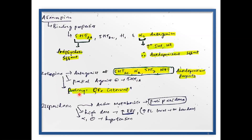Zotepine also has partial agonism at 5-HT1A, which may contribute to its antidepressant property. It tends to cause prolongation of the QT interval, probably by blocking the delayed inward rectifying potassium channel. Coming to Risperidone — its active metabolite is Paliperidone. They tend to block the dopamine receptor when given at high doses, so extrapyramidal symptoms are more likely with Risperidone and Paliperidone among atypical antipsychotics. Risperidone also increases prolactin levels even at therapeutic doses, and blocks alpha-1 receptors, contributing to orthostatic hypotension.